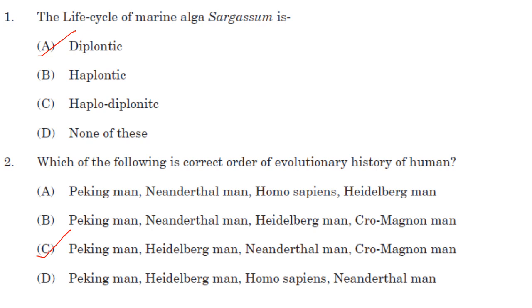Which of the following is the correct order of evolutionary history of humans? The correct order is Peking man, Heidelberg man, Neanderthal man, and Cro-Magnon man. The answer is option C.